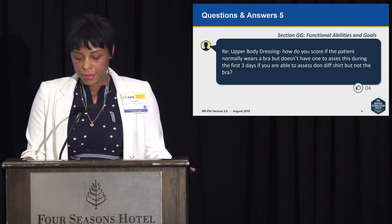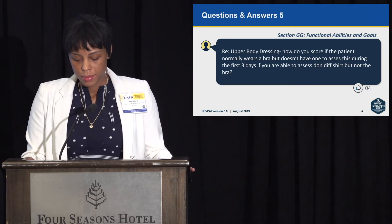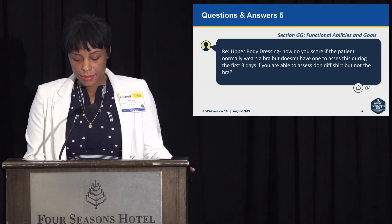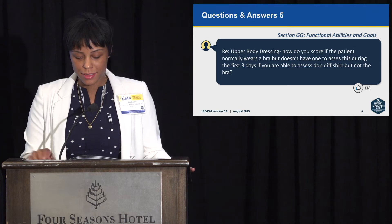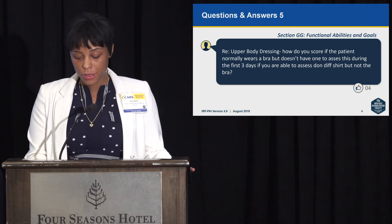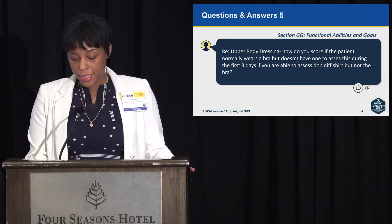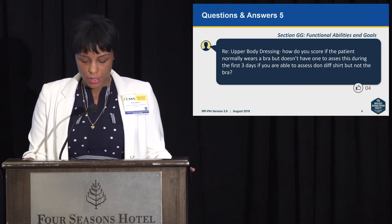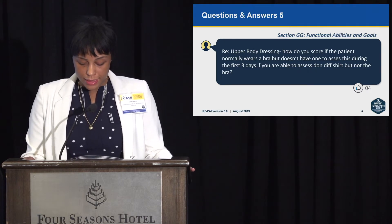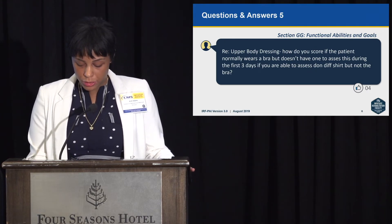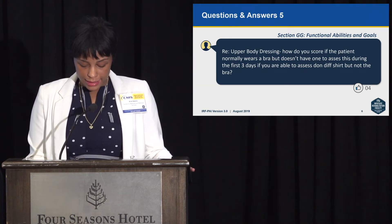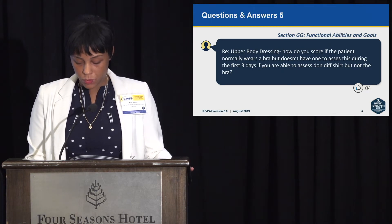Question 5, upper body dressing: how do you score if the patient normally wears a bra but doesn't have one to assess during the first three days? If you are able to assess doff of shirt but not the bra — when coding section GG activities, code based on type and amount of assistance with the clothing used at the time of assessment. In the scenario described, assess item GG0130F, upper body dressing, with the shirt.